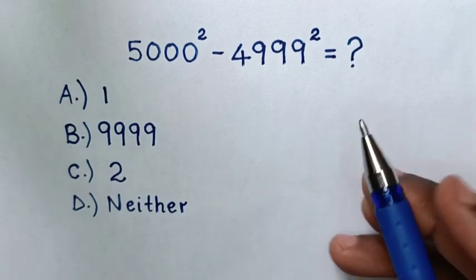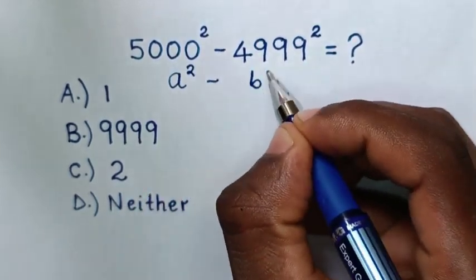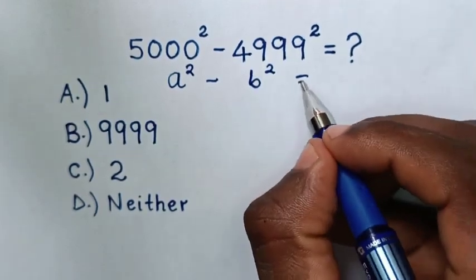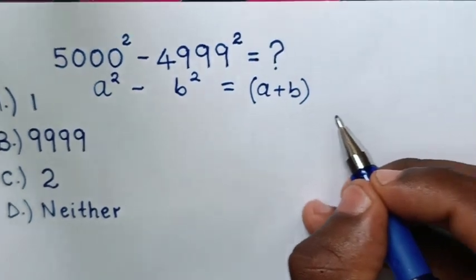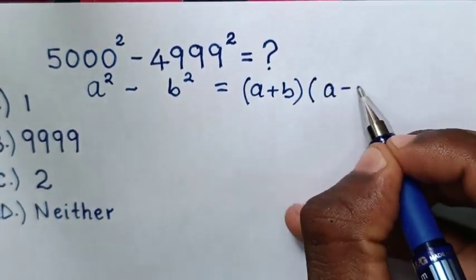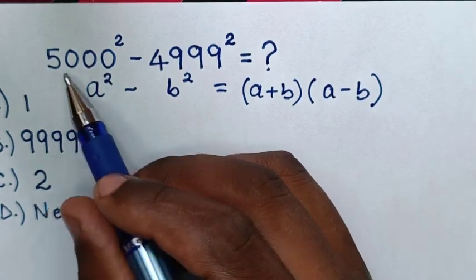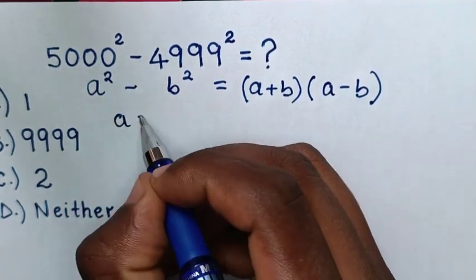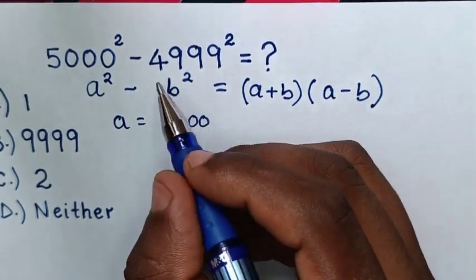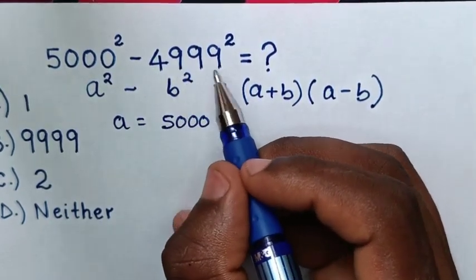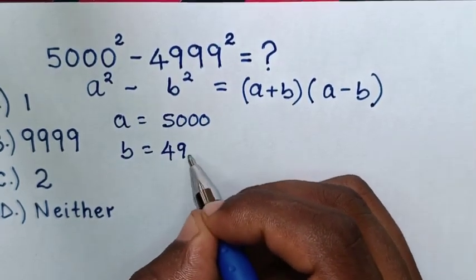So from this expression, it is in the form of a square minus b square, which is equal to (a plus b) times (a minus b). When you compare a square and 5000 square, then a is equal to 5000. And when you compare b square and 4999 square, then b is equal to 4999.